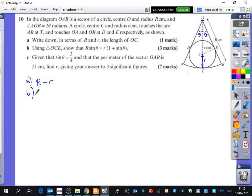Using triangle OCE, show that R sine theta equals r brackets 1 plus sine theta. So we have OCE here, and we're going to try and think about how those things are connected together. I might draw out what we have with OCE, just because sometimes when you've got a really busy diagram, it can be quite hard to see what's happening. Haroon, you're right that that is a right angle between OCE and E.